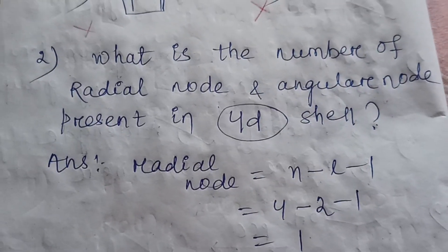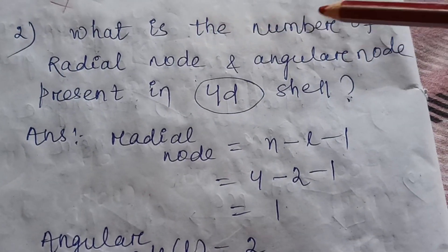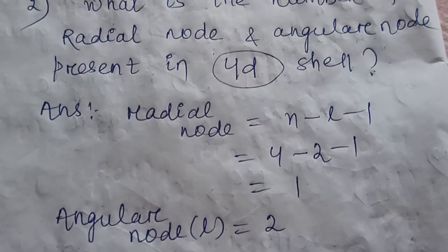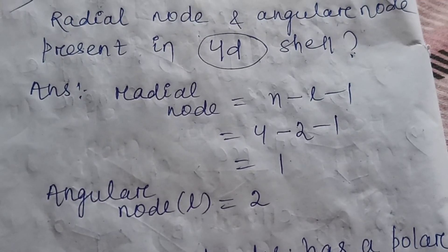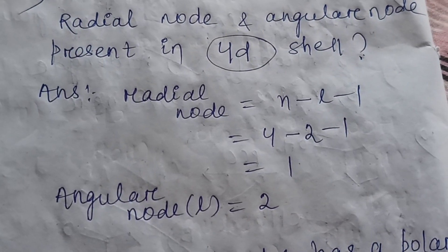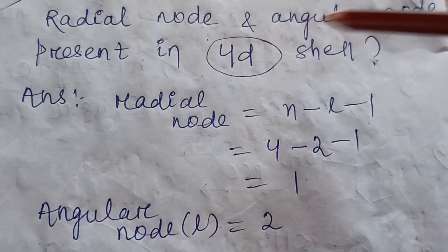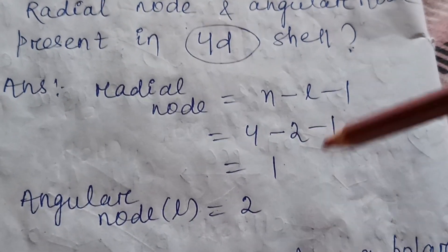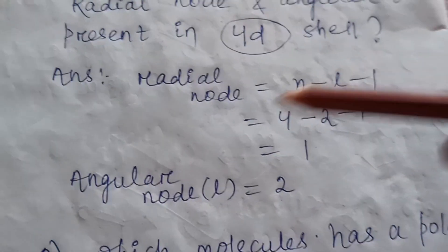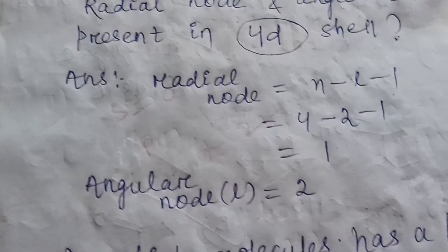Question number two: what is the number of radial nodes and angular nodes present in the 4d orbital? The formula for radial nodes is n minus l minus 1, and angular nodes equals l. For 4d: n = 4, l = 2. So radial nodes = 4 minus 2 minus 1 = 1. Angular nodes: for s l=0, p l=1, d l=2, so angular nodes = 2.